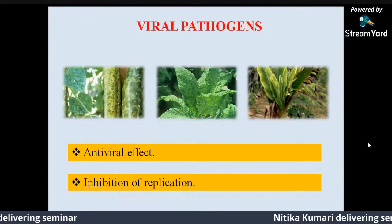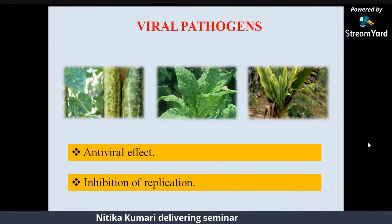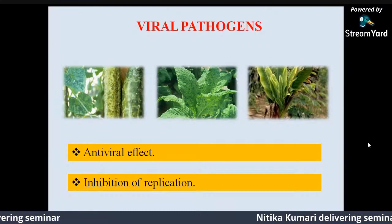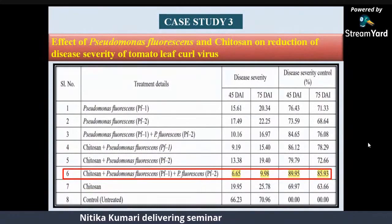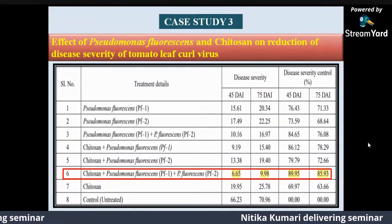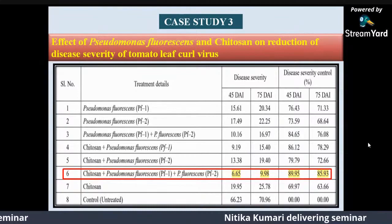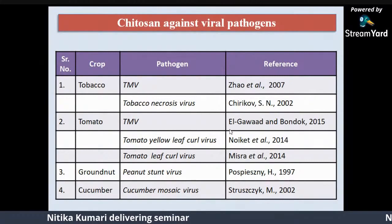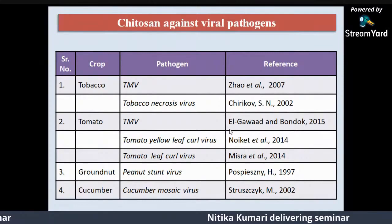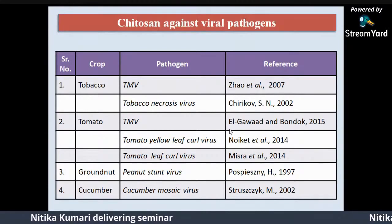Chitosan is also effective against various viral pathogens due to its antiviral effect. It helps in the inhibition of replication and systemic multiplication of viral particles in the host plant, thus imparting resistance. A case study indicates that when Chitosan was treated in combination with Pseudomonas fluorescens strain, more disease control was observed with less disease severity compared to single and dual combinations. Viral pathogens controllable by Chitosan include tobacco mosaic virus, tobacco necrosis virus, peanut stunt virus, tomato leaf curl virus, tomato yellow leaf curl virus, and cucumber mosaic virus.